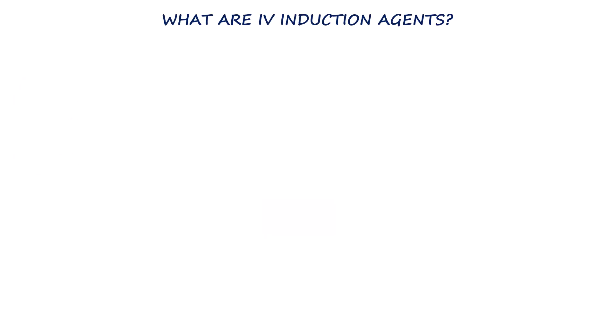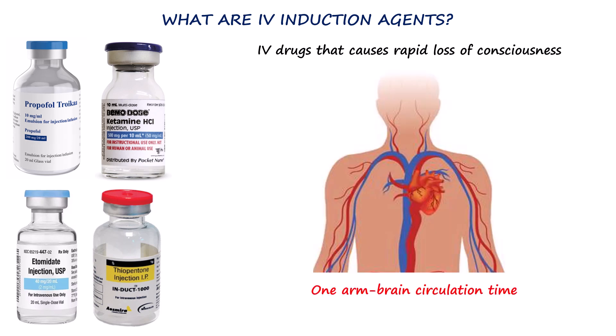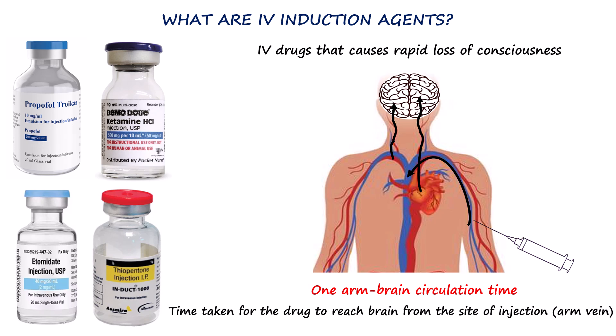IV induction drugs are drugs which, when given intravenously in an appropriate dose, can cause rapid loss of consciousness. The rapidity of their onset is described as occurring within one arm-brain circulation time, which is the time taken for the drug to travel from the site of injection — usually the arm — to the brain. All induction agents have a very short arm-brain circulation time, and we'll look into them when we discuss individual drugs.